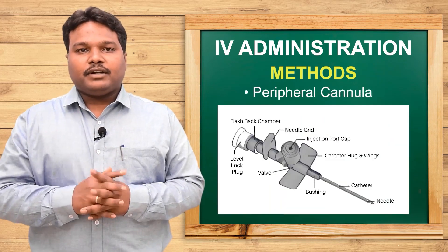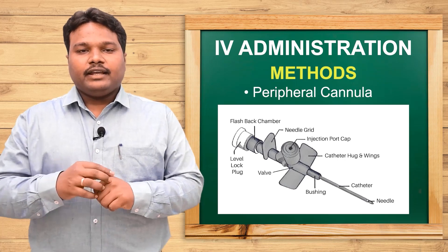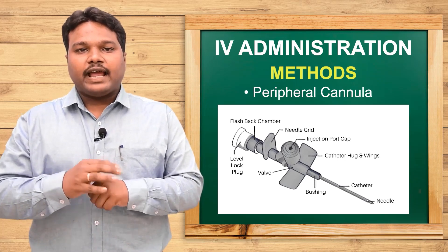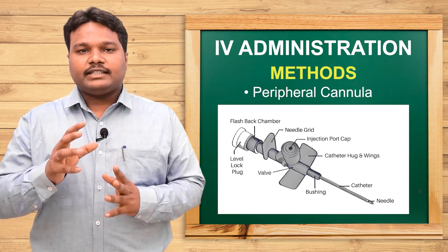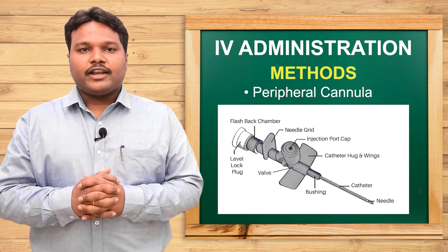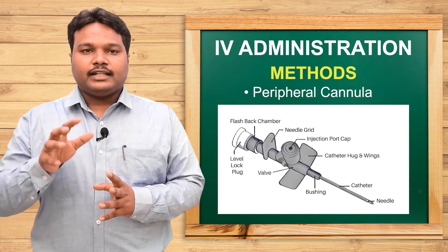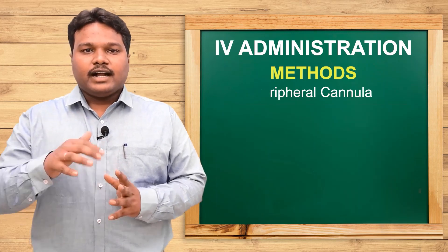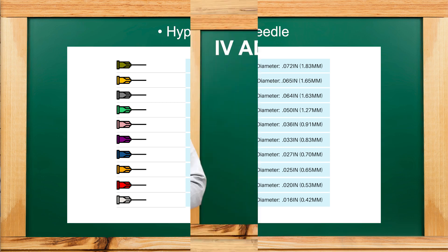Peripheral cannula is what we commonly see in the hospital — it is placed in the patient's hand or wherever there is a bulging vein, to administer lost fluids and drugs. Hypodermic needle is used to administer IM injections and insulin injections through the skin.